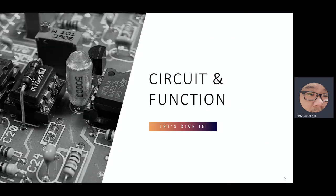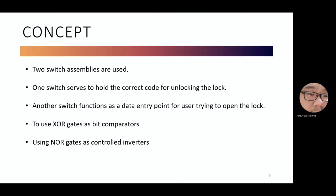Next, here is the circuit and its function. First of all, the concept. In our project, there will be two switch assemblies being used. One switch serves to hold the correct code for unlocking the lock. Another switch functions as a data entry point for user trying to open the lock. And to use exclusive OR gates as bit comparators and using NOR gates as controlled inverters.